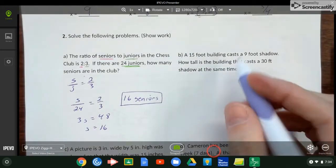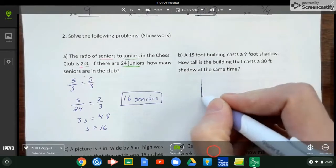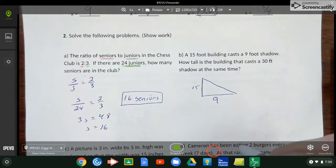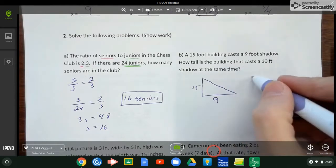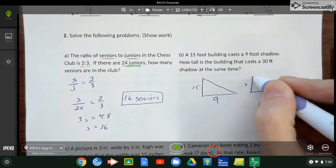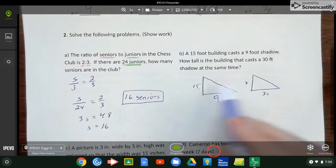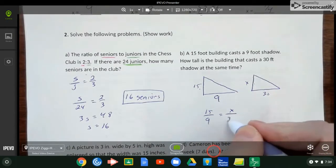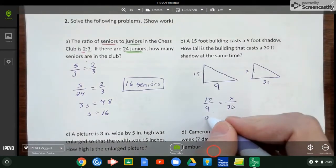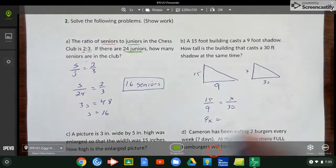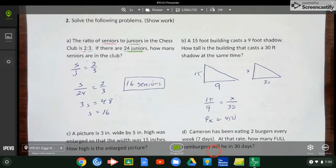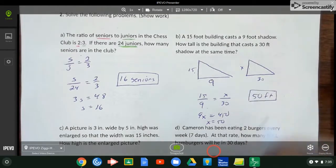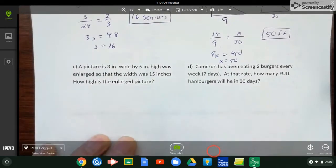These are slightly different problems. We've got a shadow problem - you've probably seen these types of problems. A 15 foot building casts a 9 foot shadow on the ground. How tall is that building that casts a 30 foot shadow? So we've matched our pieces up - height, so 15 and x are both the heights. The shadows are 9 and 30. So I did height over shadow, so that's 9x equals 450, and when I divide that by 9, I get x equals 50, so 50 feet.